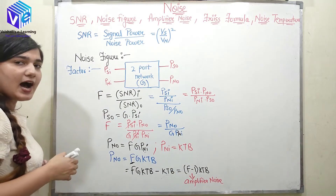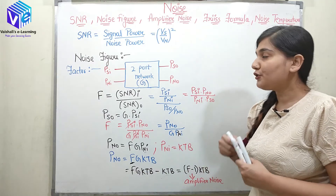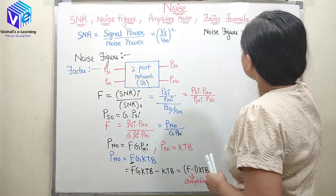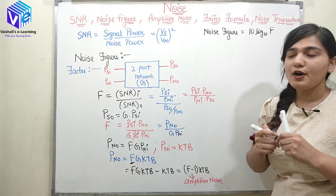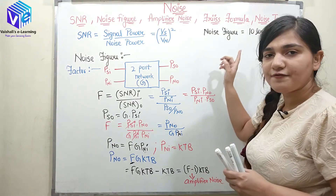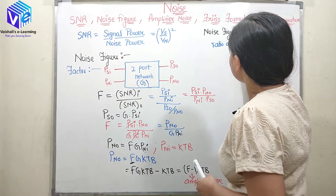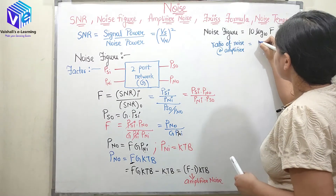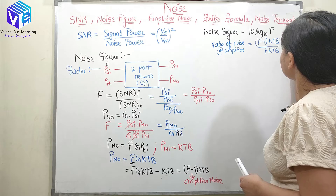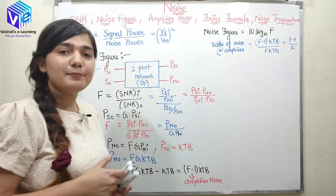Now it is clear how to find amplifier noise and noise factor. Noise figure = 10 × log₁₀(noise factor). So first find noise factor F, then compute noise figure from that formula. The ratio of amplifier noise to total output noise is (F−1)×KTB / (F×KTB) = (F−1) / F.